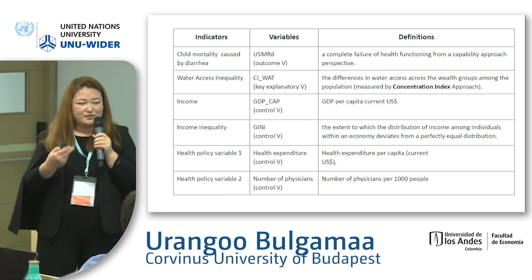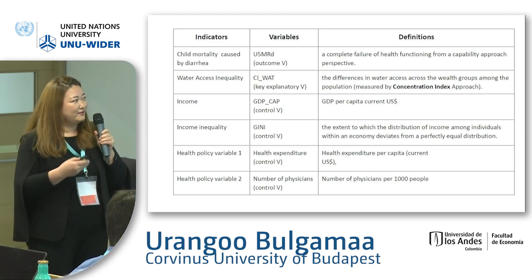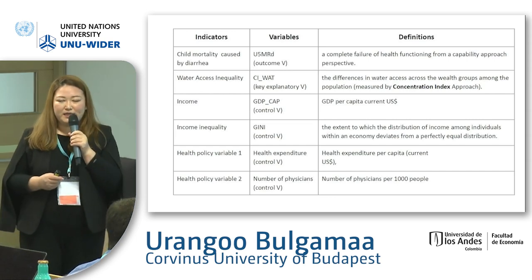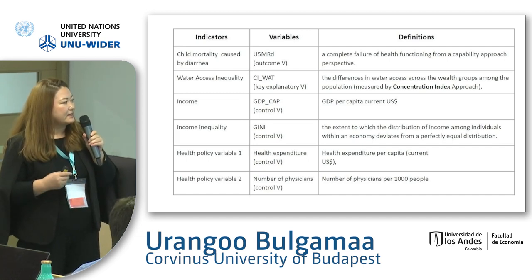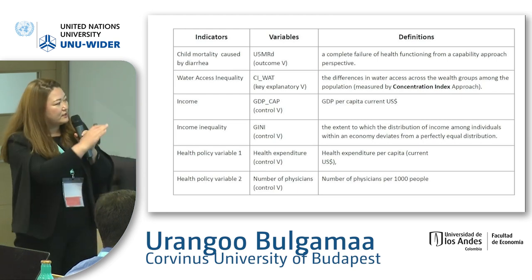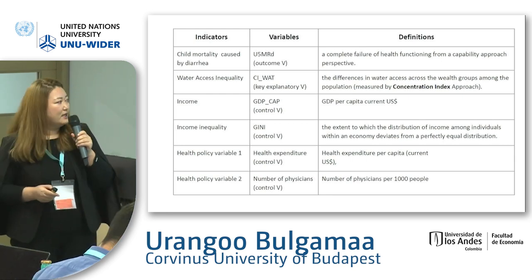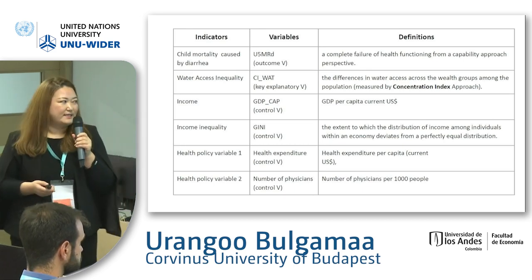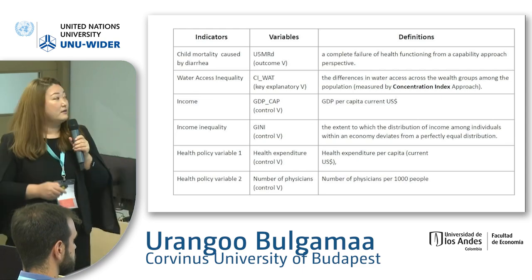The research design is summarized in a table with six different indicators. The outcome variable is child mortality caused by diarrhea. This is followed by the water access inequality indicator, which was estimated by myself using JMP methods and the JMP dataset. Control variables include income, income inequality, and two health policy variables: health expenditure and the number of physicians. The control variables were collected from the World Bank World Development Indicators. The child mortality caused by diarrhea outcome variable is collected from the International Health Inequality Evaluation (IHME) dataset.